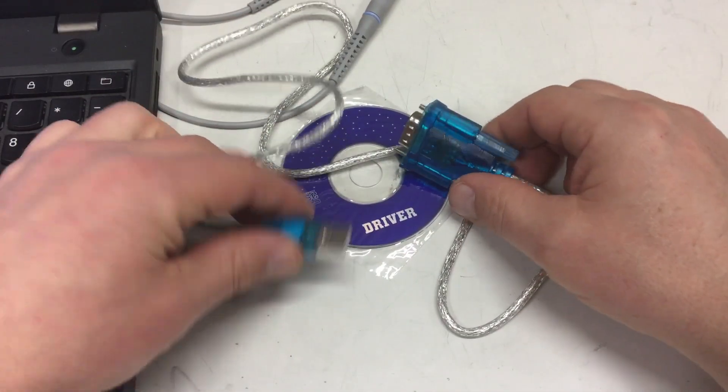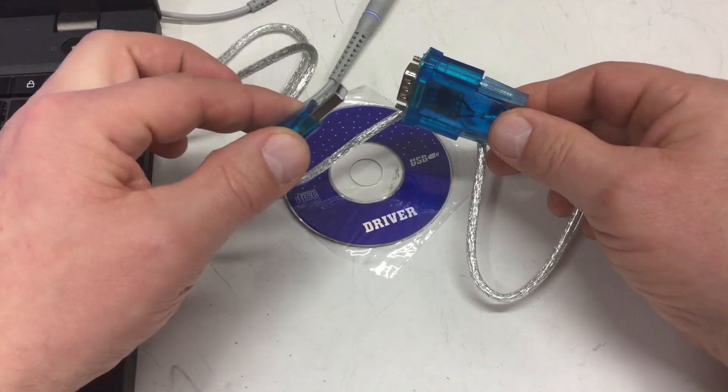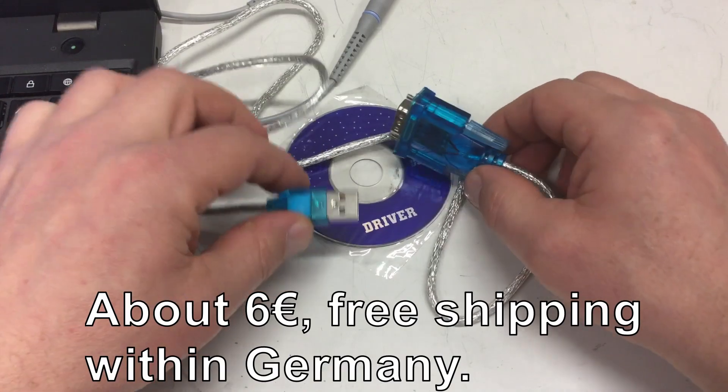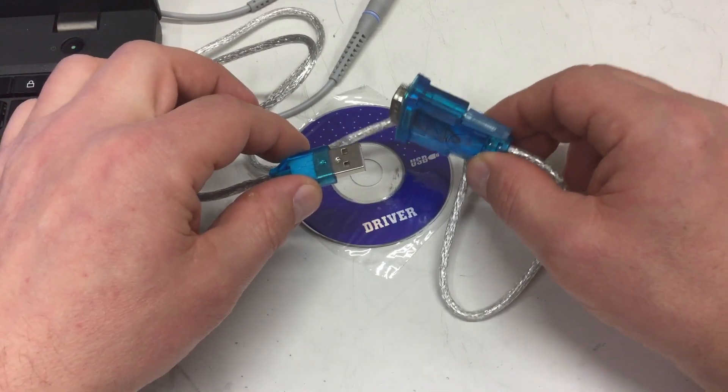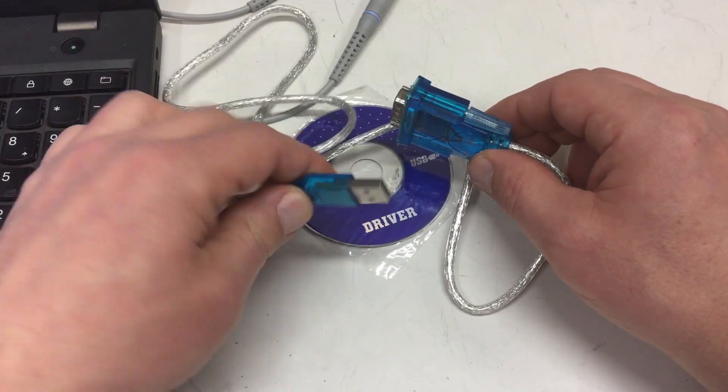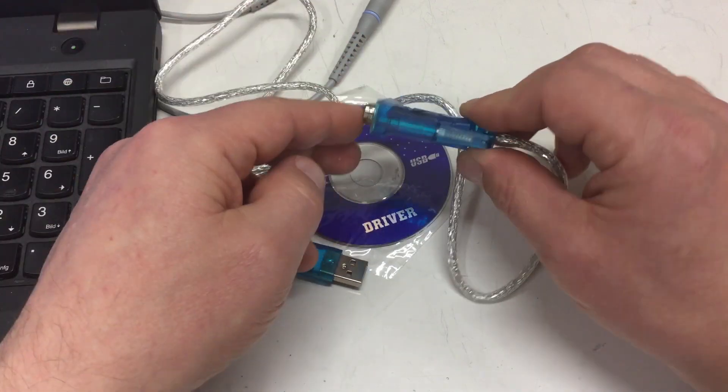So that was the review of the cheapest RS232 to USB converter you can get on eBay. Bottom line: it's not an RS232 to USB converter, it's just a USB to serial 5-volt converter.